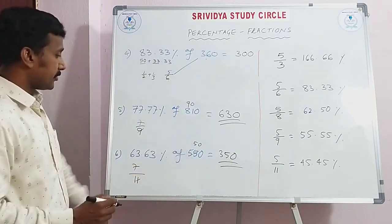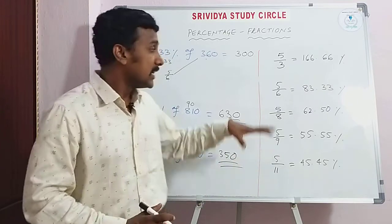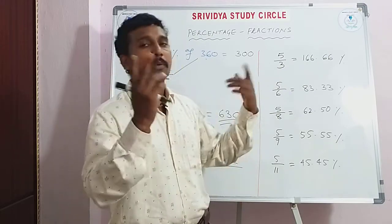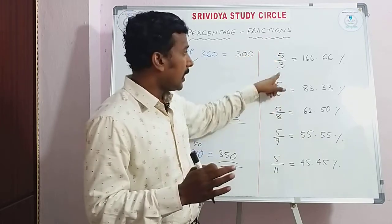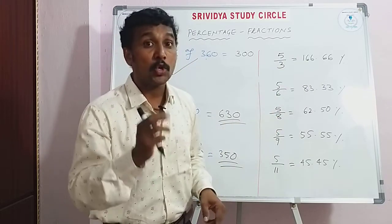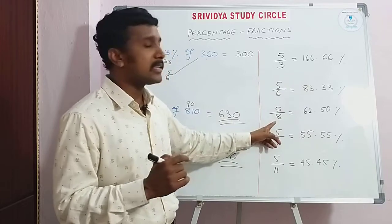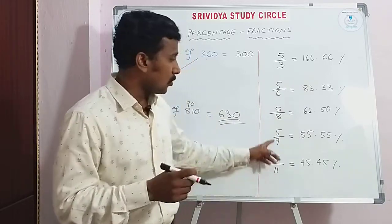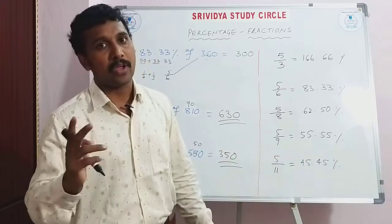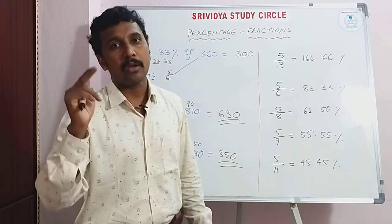For values like 5/3: 1/3 = 33.33, so 5/3 = 166.66. Similarly, 5/6: 1/6 = 16.66, so 5/6 = 83.33. 5/8: 1/8 = 12.5, so 5/8 = 62.5. 5/9: 1/9 = 11.11, so 5/9 = 55.55. 5/11: 1/11 = 9.09, so 5/11 = 45.45. These are really important values to know.